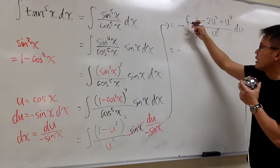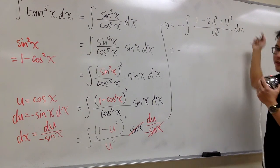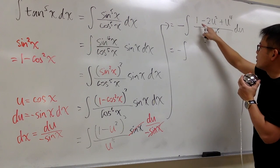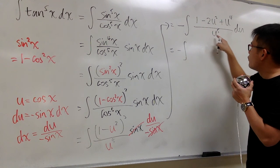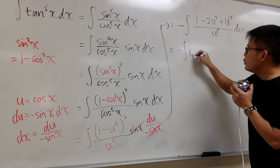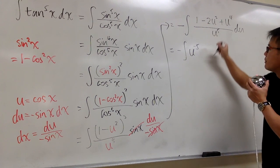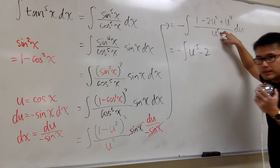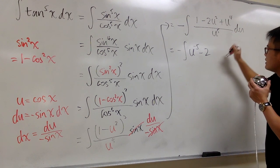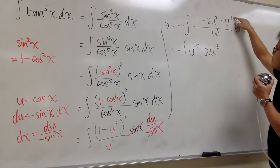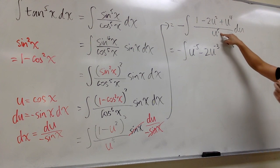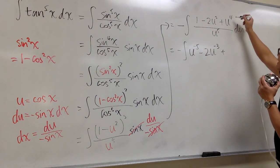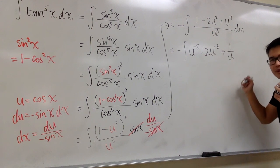Now we split the fraction, since there is one term in the denominator. We still have the negative out front and the integral sign. Splitting gives us: 1 over u to the fifth power, which is u to the negative five; minus 2 times u squared over u to the fifth power, which is minus 2u to the negative three (since 2 minus 5 is negative 3); plus u to the fourth over u to the fifth, which I'll write as 1 over u.